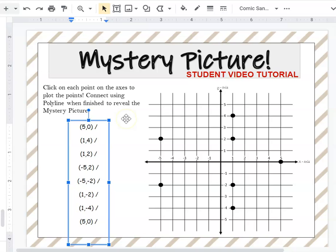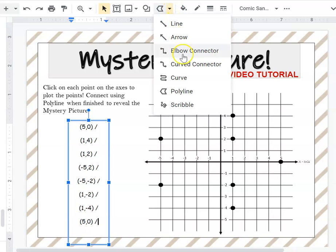Then you're going to choose a line to connect each coordinate pair to the next one in that order. Hover over to where you see select line, click on the down arrow, and click on polyline.